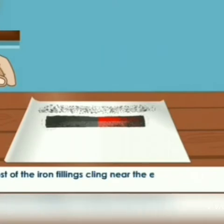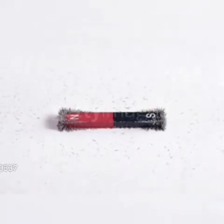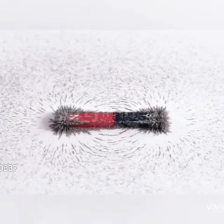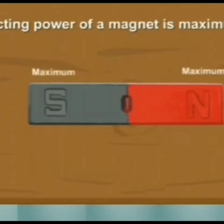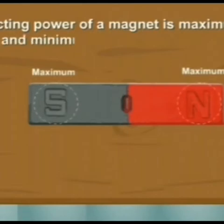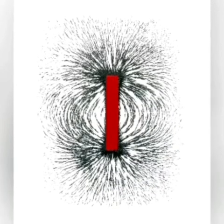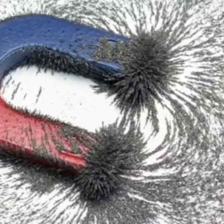What will we observe? We will observe that maximum iron filings cling near the ends of the magnet, while there are very few iron filings or pins in the middle. Maximum number of iron fillings magnet kee donoh end mein ja ke chipak raha hai, jabki middle part mein bohat kam hi iron filling attracted ho raha hai. Therefore, we conclude that the attracting power of a magnet is maximum at the two ends and minimum at the middle. The region of the magnet where the attraction is the strongest are called poles of the magnet.